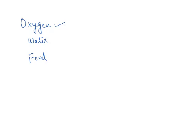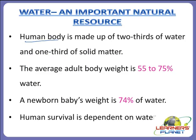Since we cannot survive more than a few minutes without oxygen, water has been ranked second only to oxygen as essential for life — we can stay a few days without drinking water, and then comes food. The human body is made up of two-thirds water and one-third solid matter. The average adult body weight is 55 to 75% water, and a newborn baby's weight is 74% water.